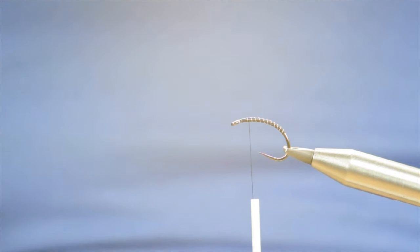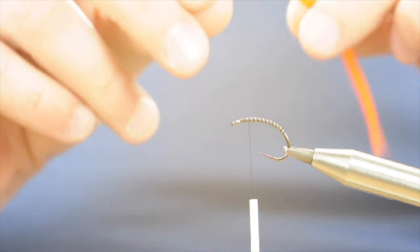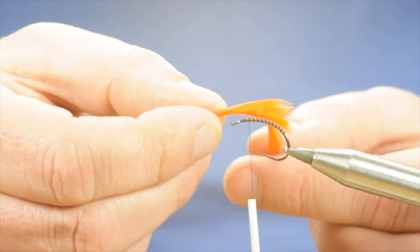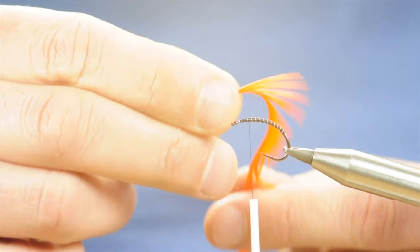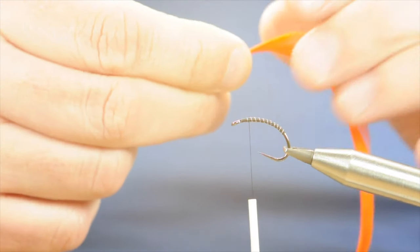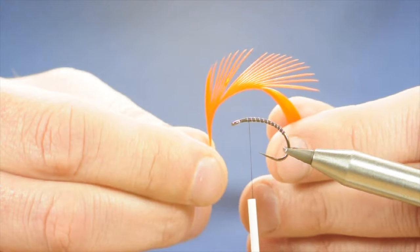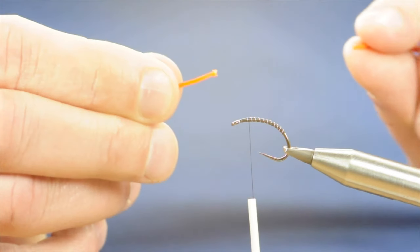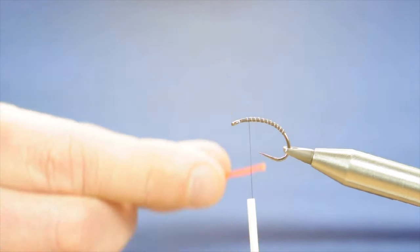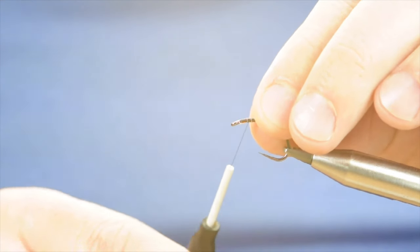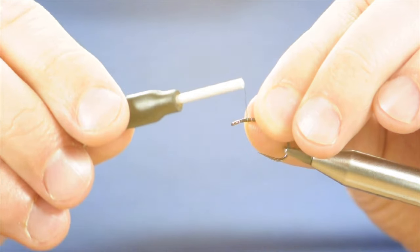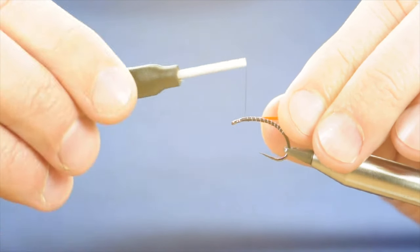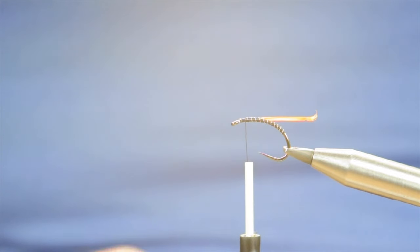So next, we're going to put our buds in. And what I'm going to use for this is this orange goose biots. It's a lovely vibrant colour. Unfortunately, I keep all my goose biots in a packet, so I can't tell you where I got this one. But it's a really nice bright colour. So I'm going to take off two strips. I'll just get the first one in so I don't misplace it. And I'm going to catch it just so that the tip is directly behind the eye. Two or three turns first one.